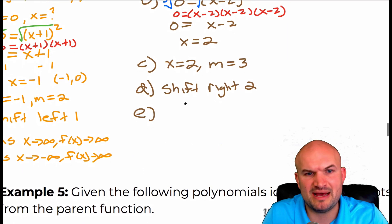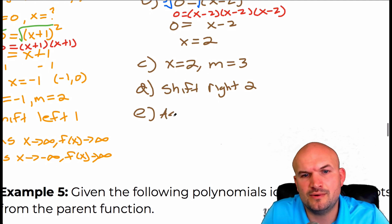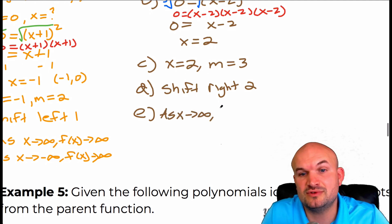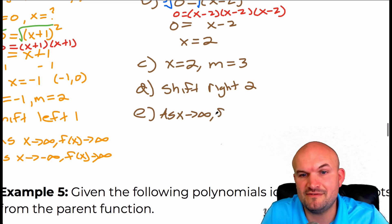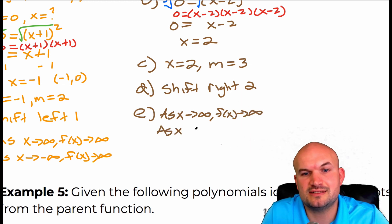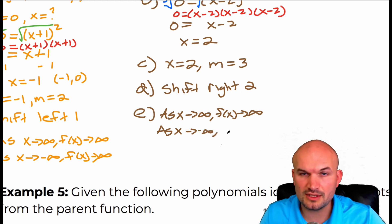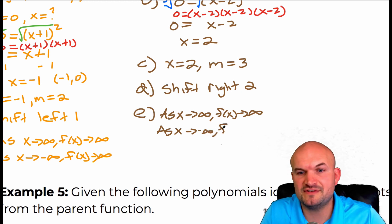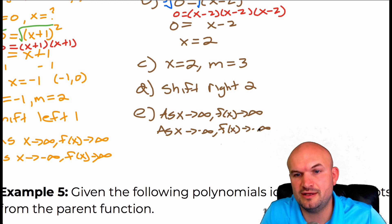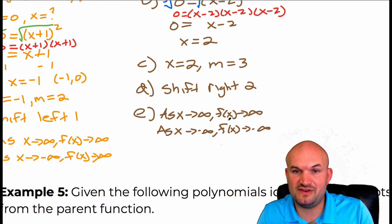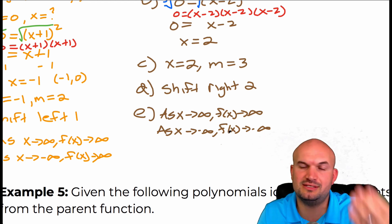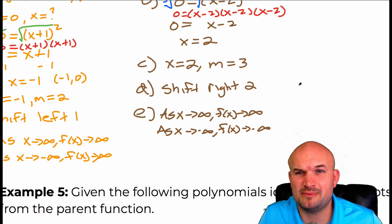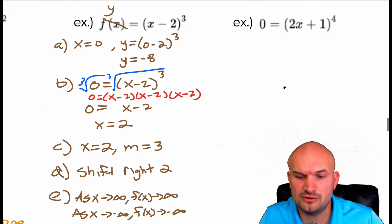Remember: x is representing the x values, f of x is representing the output values, or the y values — the up and downs. This is the left and right, this is the up and downs. For the next two examples, I'll just say rise/fall to make things go a little bit quicker.